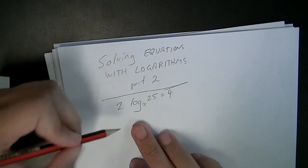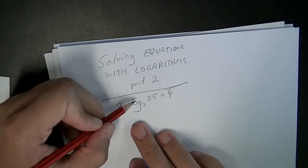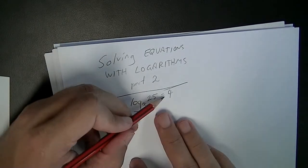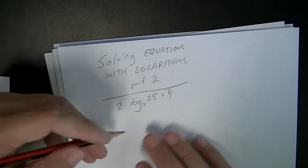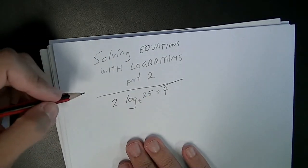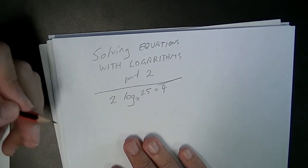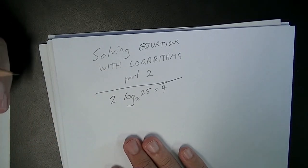Now, looking at this one, it's 2 times log base x of 25 equals 4. Now there's two different things you can do in your first step here. I might run through both methods of solving this so you can see how to attack it.